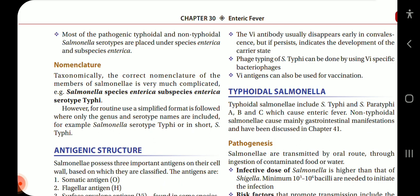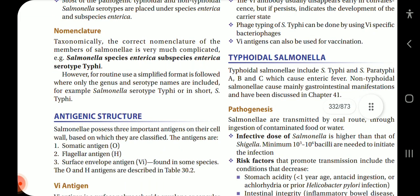Regarding nomenclature, taxonomically the correct nomenclature of members of Salmonella is very complicated. For example: Salmonella species enterica, subspecies enterica, serotype typhi. However, the routine simplified format is followed where the genus and serotype names are included — for example, Salmonella serotype typhi, or in short, S. typhi.